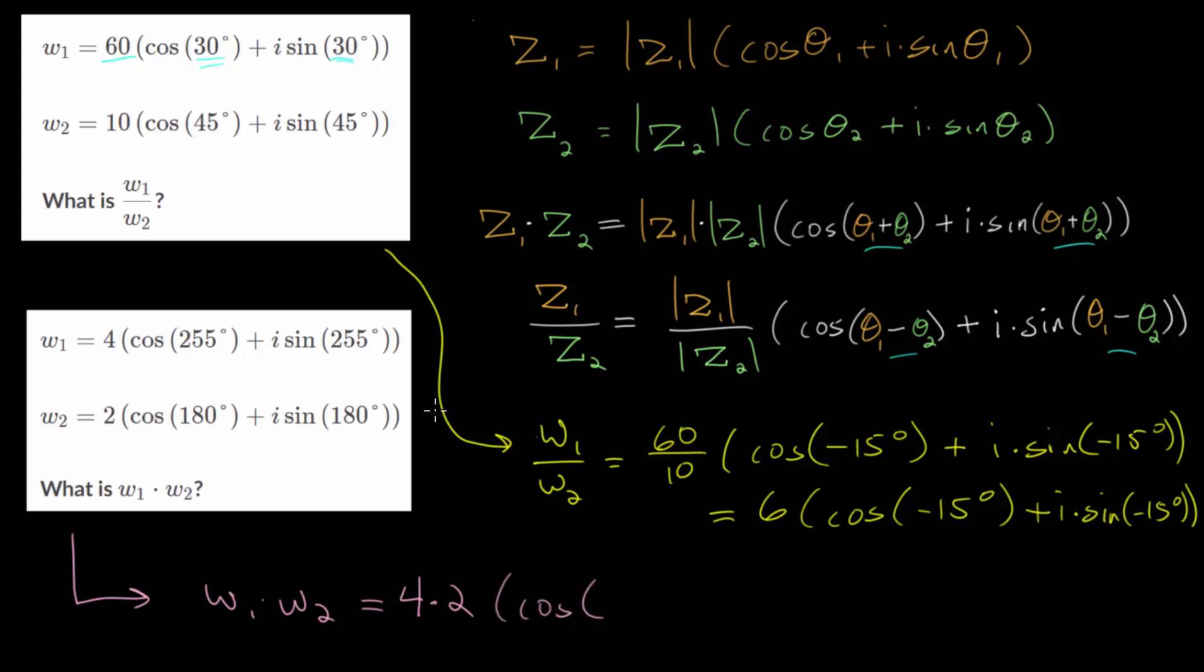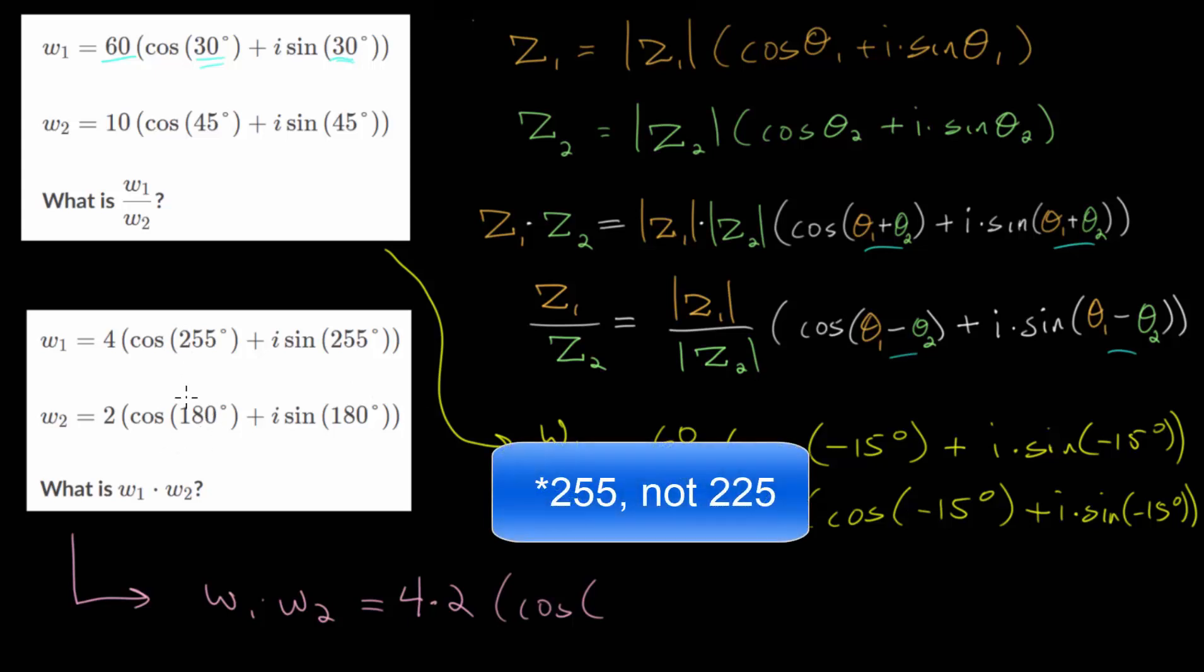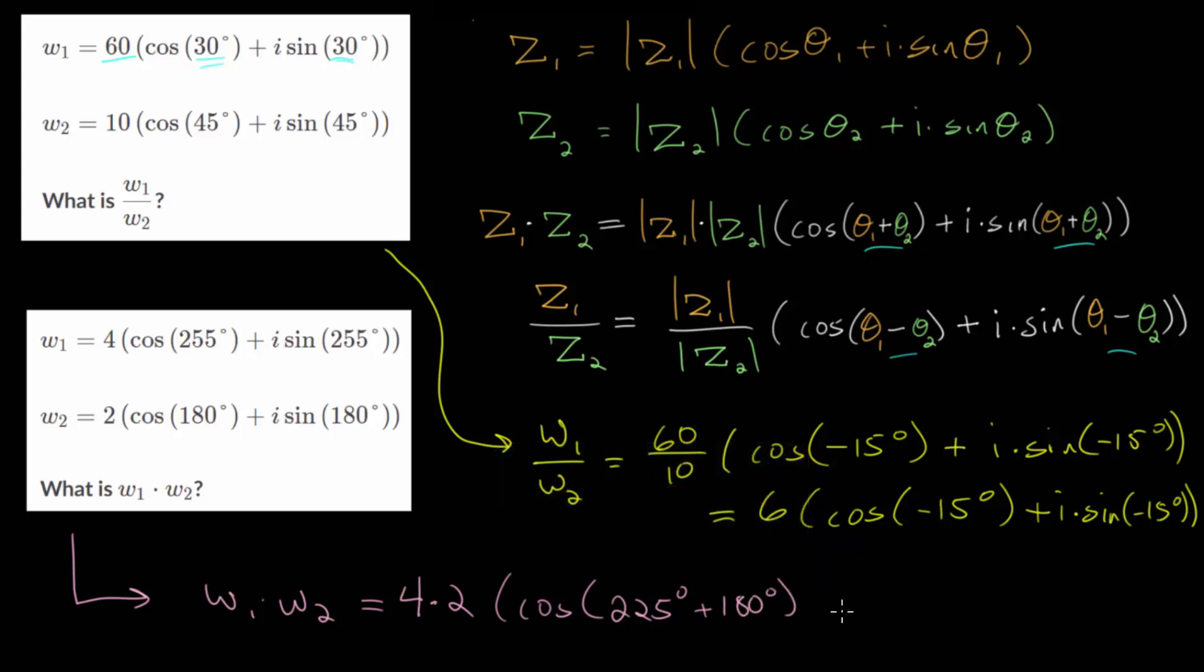We have the cosine of 225 plus 180. Let me write all of this out. When we add these angles, we will get something bigger than 360 degrees. So we can actually just subtract 360 from the sum to find an angle between 0 and 360, which is typically how we will write it.